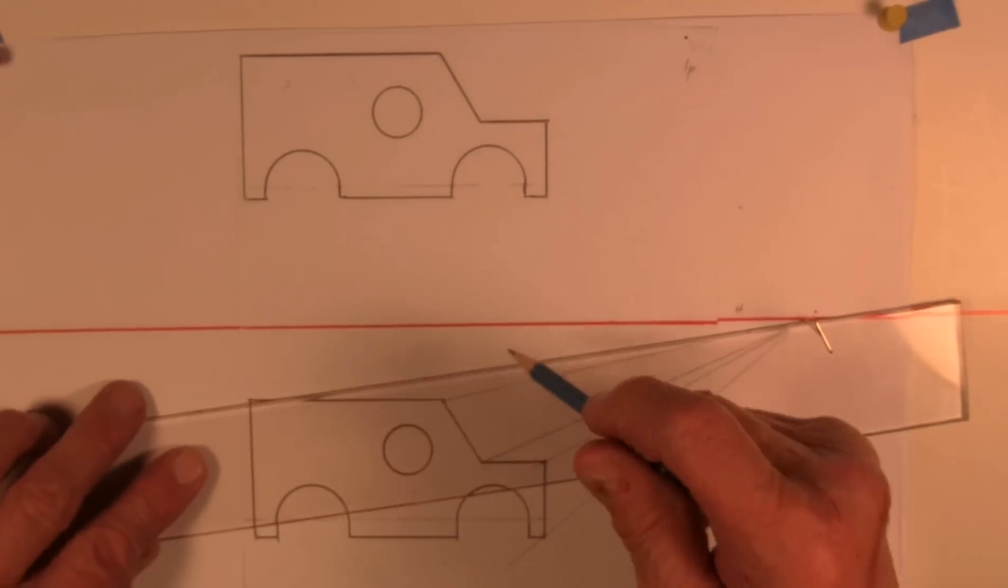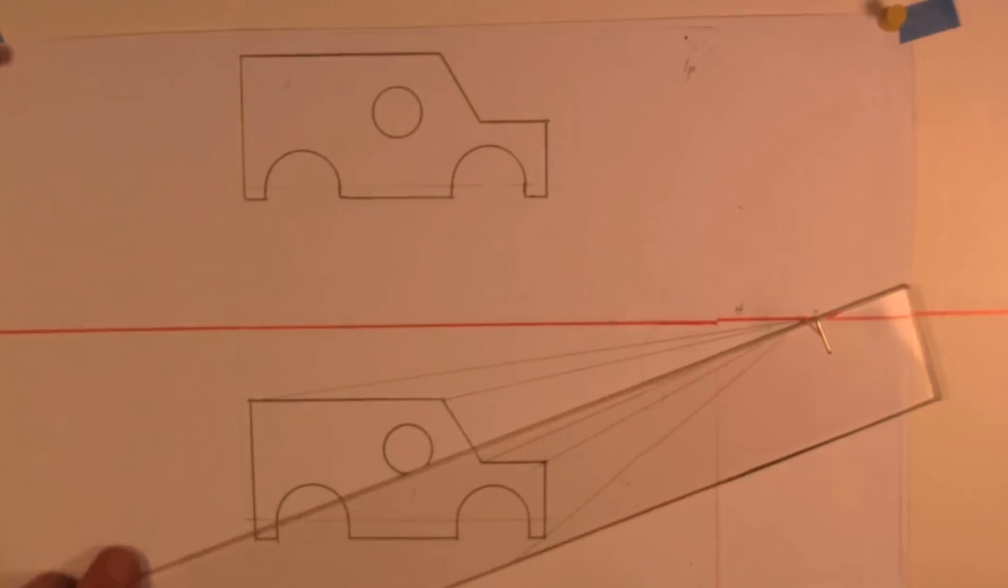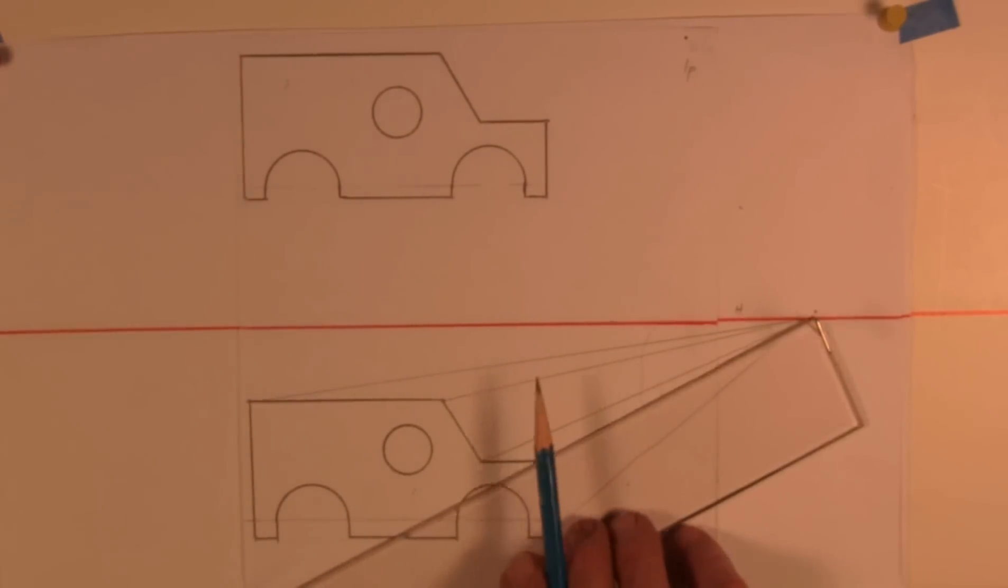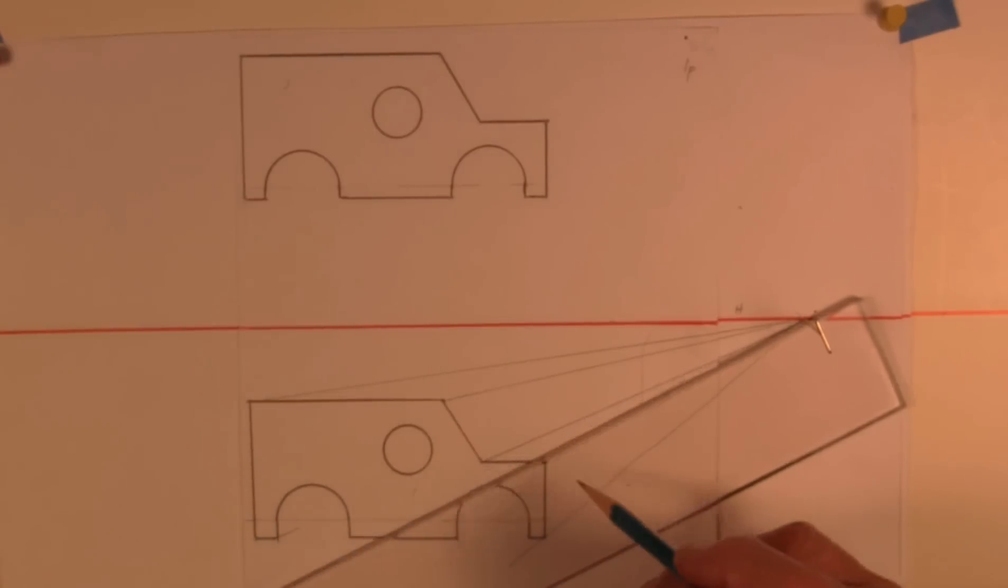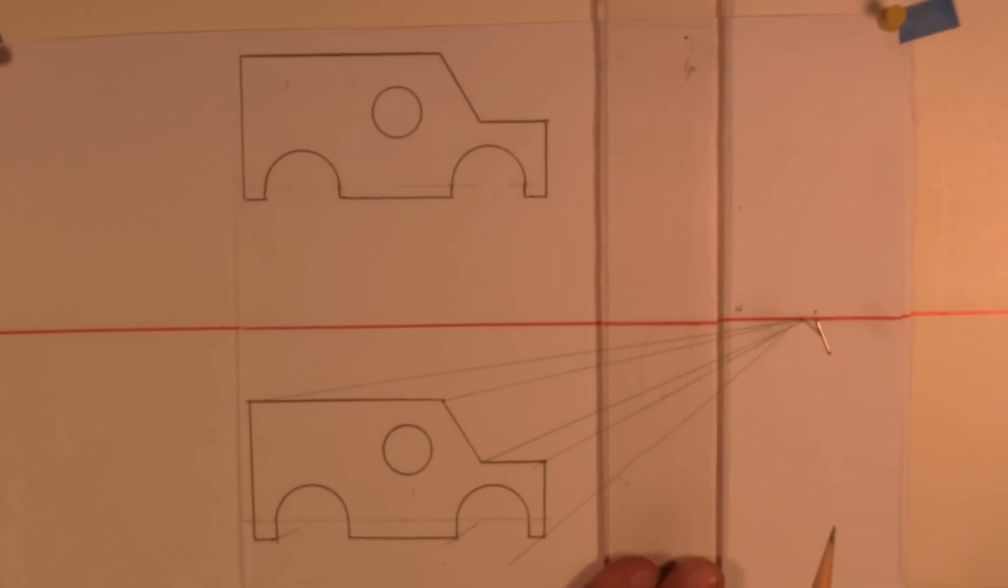In our oblique drawing, all those lines extended at 45 degrees. But in perspective, all of those lines are going to extend to the vanishing point. Now, you're going to choose the placement of that vanishing point, but it will always be on the horizon line. But you can choose where on the horizon line it will occur.